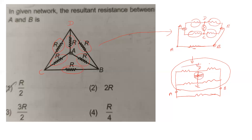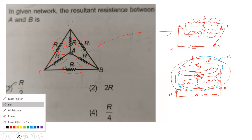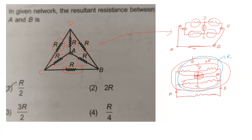If we add 2R and add 2R, and if you simplify this, this resistance is R. This is between E and B. If you simplify further, this gives R by 2.